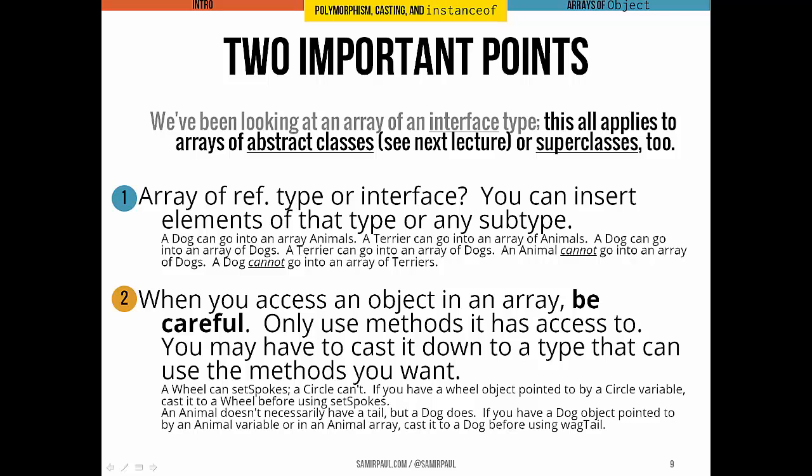Now, we've been looking at an array of an interface type in this example, but the same thing applies to arrays of abstract classes, which we'll talk about next lecture, or superclasses of one or more other classes. For instance, if I had an array of circles and some of the elements in my array were circles and some of them were wheels, the same thing applies. So two important points to walk away with.